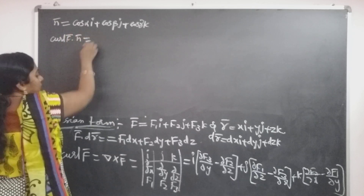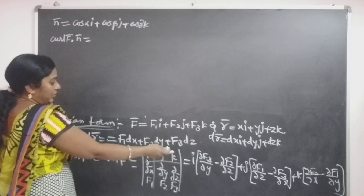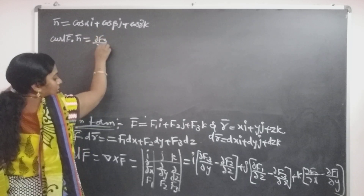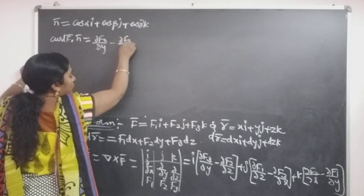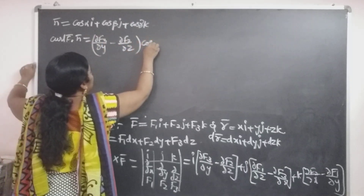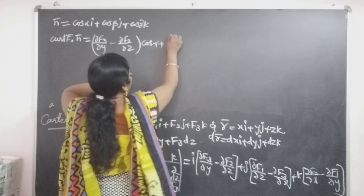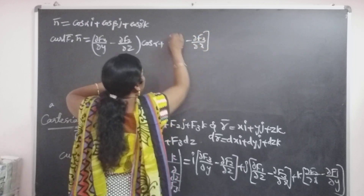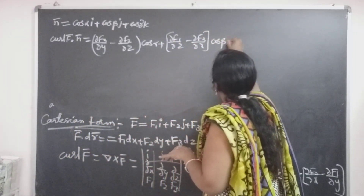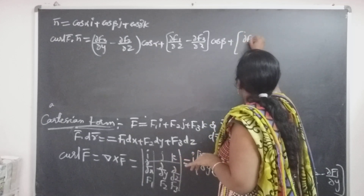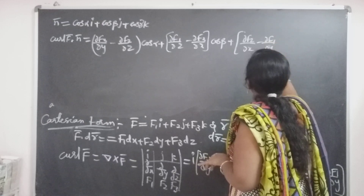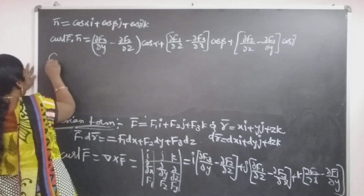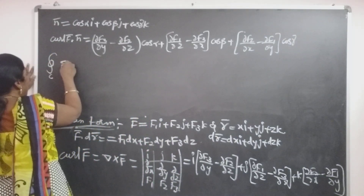Then curl F-bar dot n-bar equals the dot product of del cross F and n-bar, which is: (∂F3/∂y − ∂F2/∂z)·cos α plus (∂F1/∂z − ∂F3/∂x)·cos β plus (∂F2/∂x − ∂F1/∂y)·cos γ.